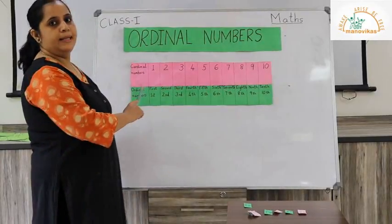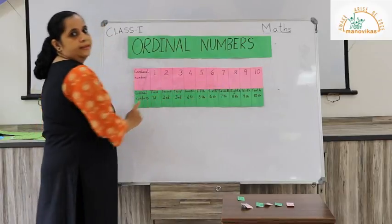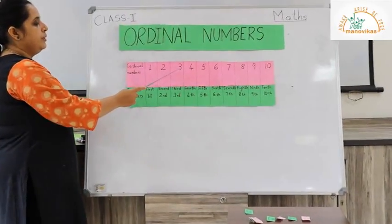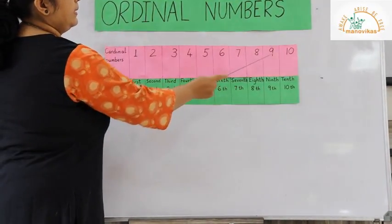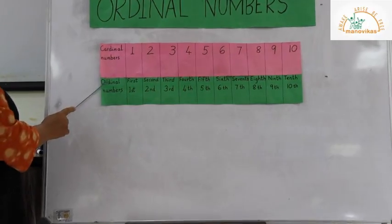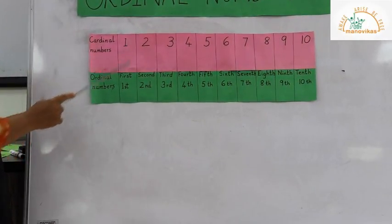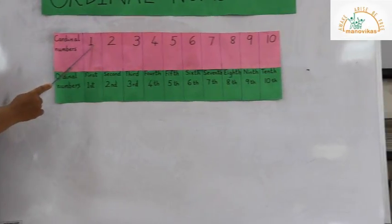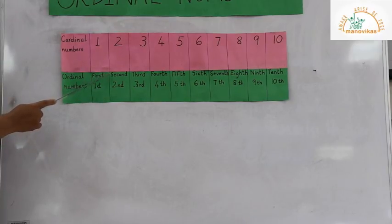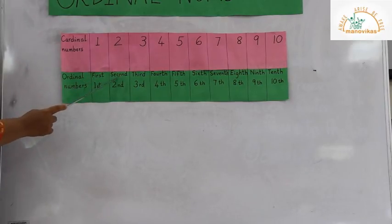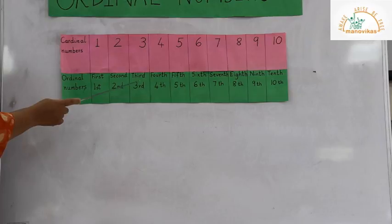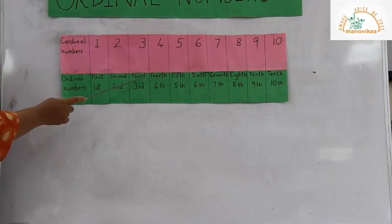Children, let us look at this table. All these numbers from 1 to 10 are called cardinal numbers. For every cardinal number we have a corresponding ordinal number. For cardinal number 1 the ordinal number is first — F-I-R-S-T. For cardinal number 2 the ordinal number is second — S-E-C-O-N-D. For cardinal number 3 the ordinal number is third — T-H-I-R-D.